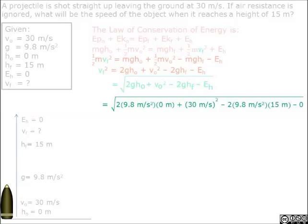So once we do that, you should come up with square root of 2 times 9.8 meters per second squared times 0 meters plus 30 meters per second squared minus 2 times 9.8 meters per second squared times 15 meters minus 0.